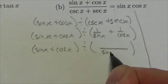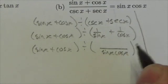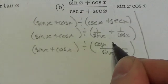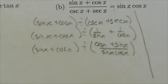The common denominator is simply going to be the product of those two denominators, so sine of x times cosine of x. And my numerator here will be cosine of x plus the sine of x.